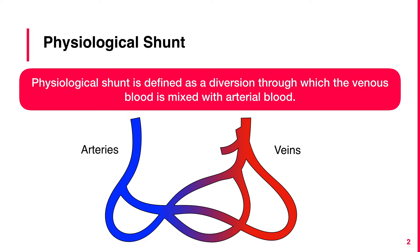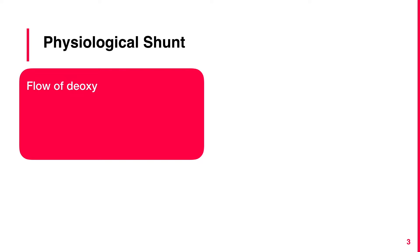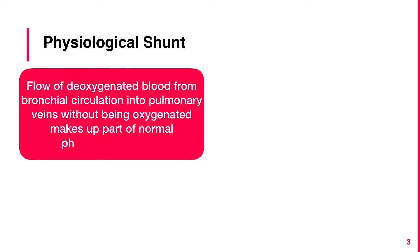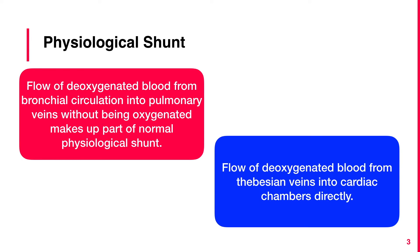Physiological Shunt has two components. First, the flow of deoxygenated blood from bronchial circulation into pulmonary veins without being oxygenated, which makes a part of normal physiological shunt. Second, the flow of deoxygenated blood from Thebesian veins into cardiac chambers directly.